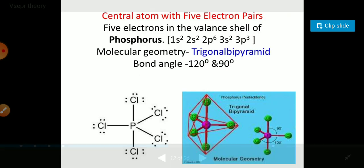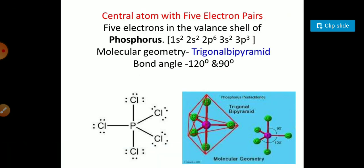The central atom with five electron pairs, like in phosphorus PCl5, has electronic configuration 1s2 2s2 2p6 3s2 3p3 with a trigonal bipyramidal structure having bond angles of 120 degrees and 90 degrees.